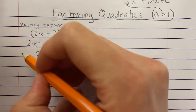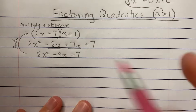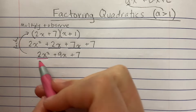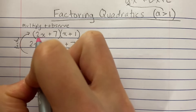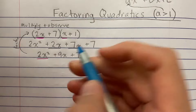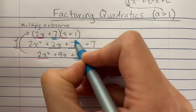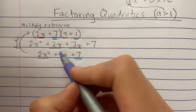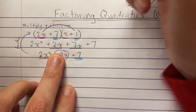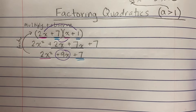When we're factoring, we're going from the expanded form back to the factored form — multiplying in reverse. Let's observe where each term came from. The 2x² came from 2x times x (first terms). The 7 came from 7 times 1 (last terms). The middle term 9x is the trickiest — it came from 2x times 1 plus 7 times x, which gives 2x+7x.